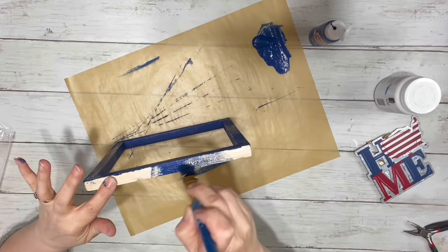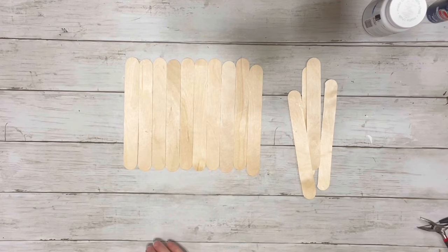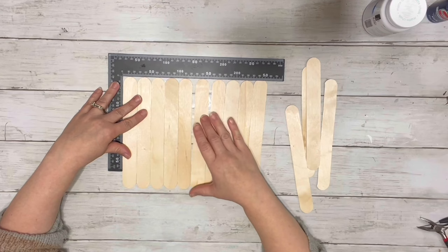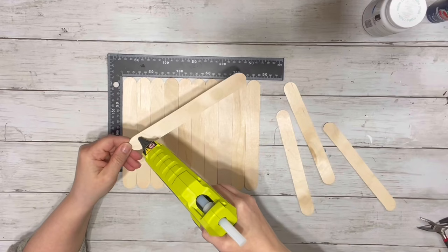And next I lined up 10 of the super jumbo popsicle sticks, trying to get ones that were as straight as possible. And once I had the 10 lined up, I just used my square to make sure they were nice and straight. And then hot glued down the other four popsicle sticks to the backing to keep that secure.